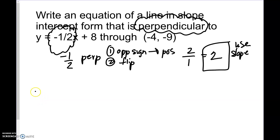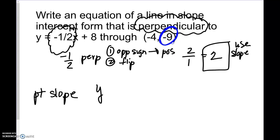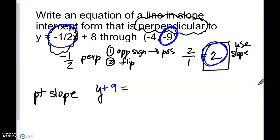Now we start by writing our equation in point slope form. The y value is negative nine, so we write plus nine. We have two slopes here — negative one half and two. Remember, use the perpendicular slope, which is two. Do not use negative one half because that would give a parallel line. Our x value is negative four, so we write plus four. If they said leave it in point slope, we'd be done, but they want slope intercept form.